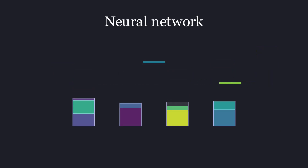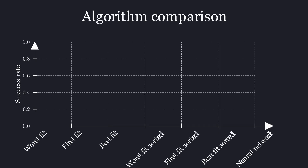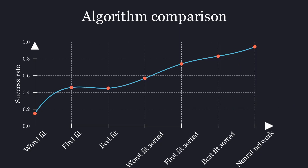To test the neural network more rigorously I made a dataset of 1000 challenging sets of weights and bins and compared it with the classic bin packing algorithms. The neural network packed over 94% of these sets whereas the best classic algorithm only packed 83%, and it even outperformed all of the algorithms combined. In an even more challenging dataset the neural network packed about 88% whereas the best algorithm packed about 69%. It also seems to generalize very nicely to much larger sets than it was trained on.